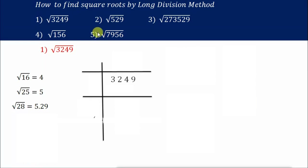So we'll do them one by one. Let us pick the first one, that is 3249. First and foremost, you have to put the line and write the number 3249. The first step is to start by pairing the digits from the right-hand side. So this is one pair and this is another pair.